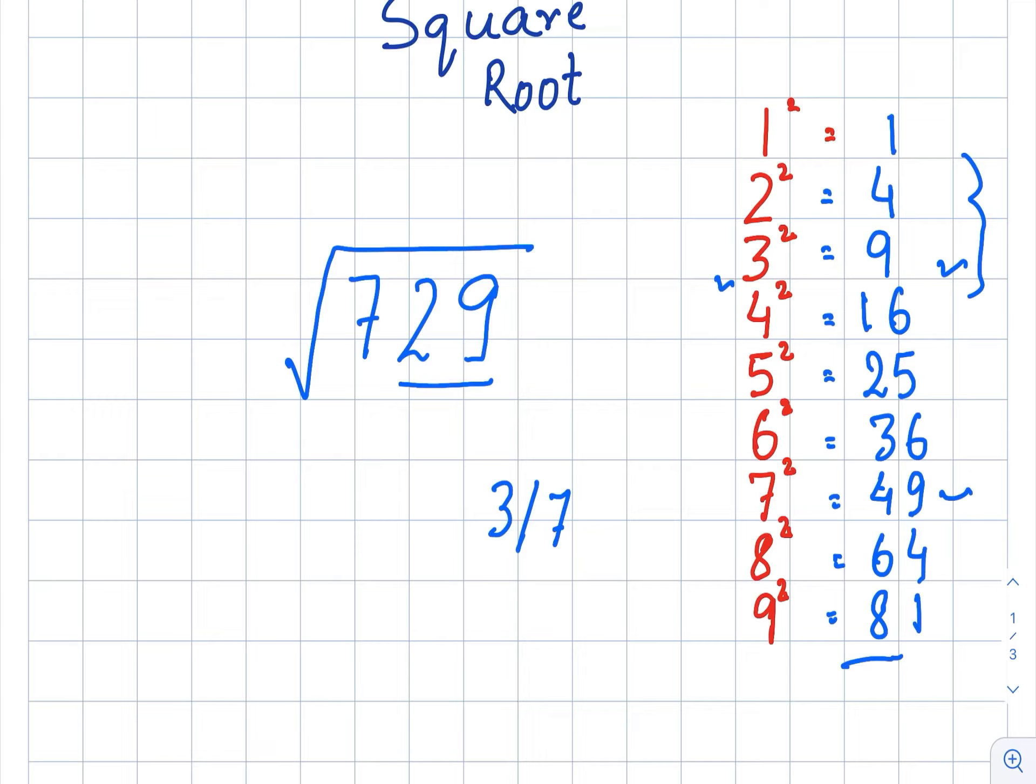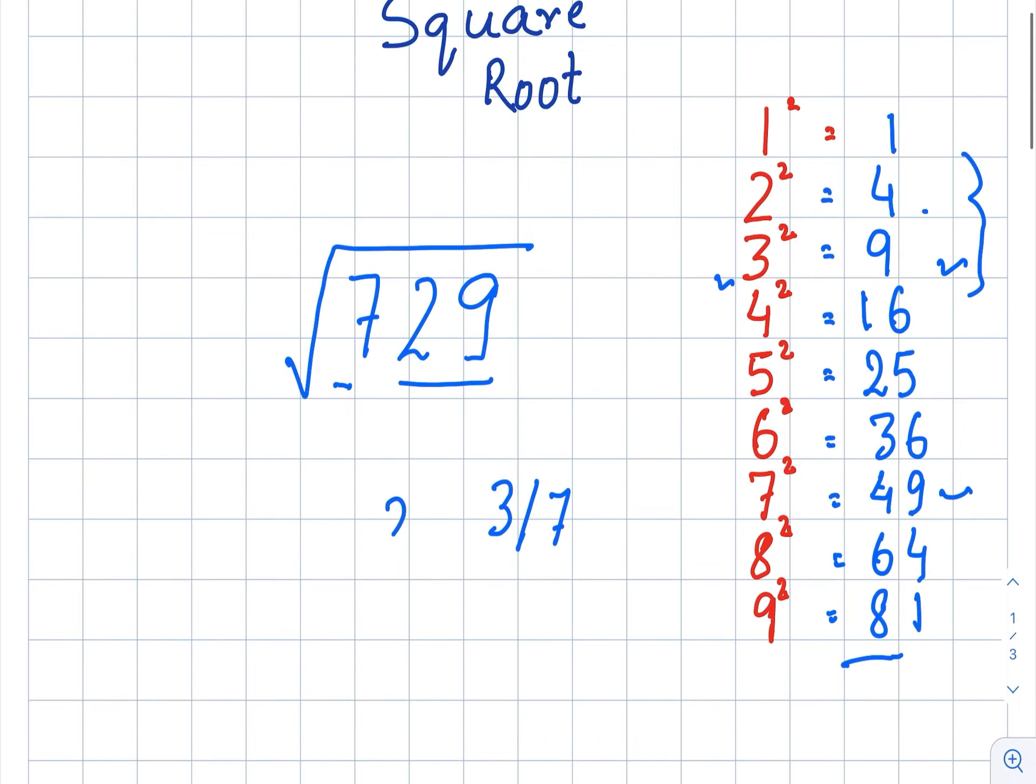Now for 7, we will pick the number which is closer to 7 or equal to 7 but not greater than 7. So closer to 7 is 4, which is the square of 2. So we will write here 2. 2 will be at the tens place.